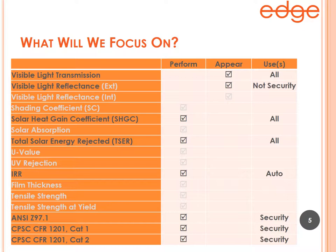We've separated the list into performance versus appearance. Now we're going to ask: are there some specs we really need to have on the tip of our tongue with a conversational understanding, versus some we need to know and know where to find, but that aren't as important day-to-day for understanding how Edge products compare to others and explain the value of Edge performance?